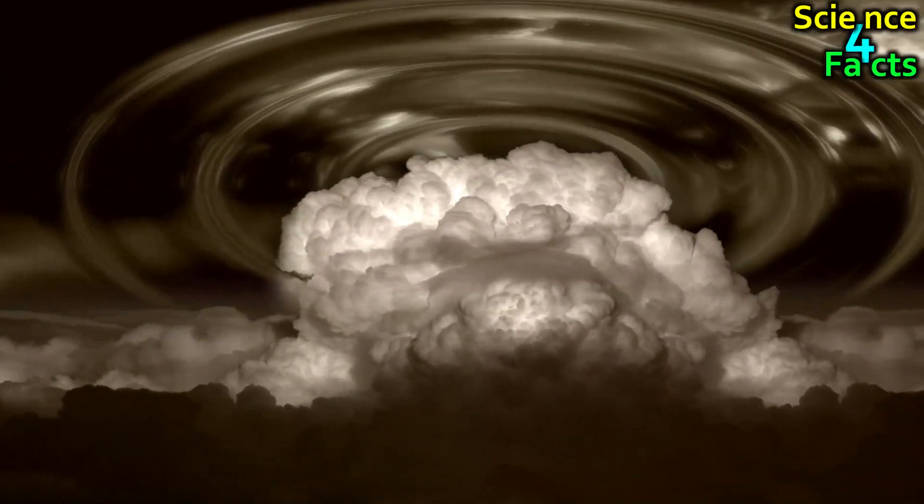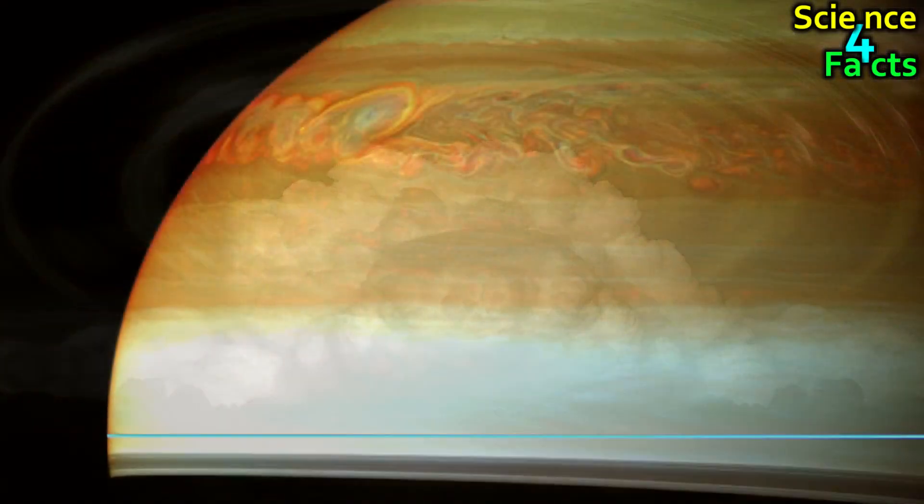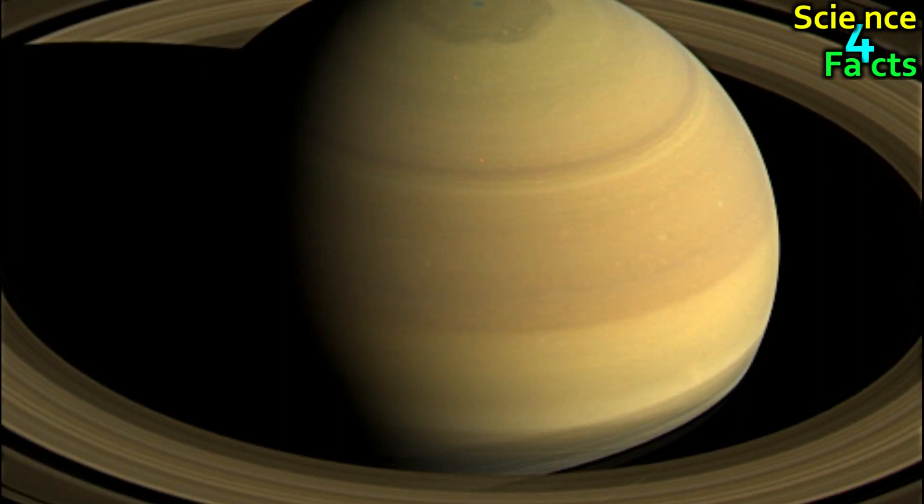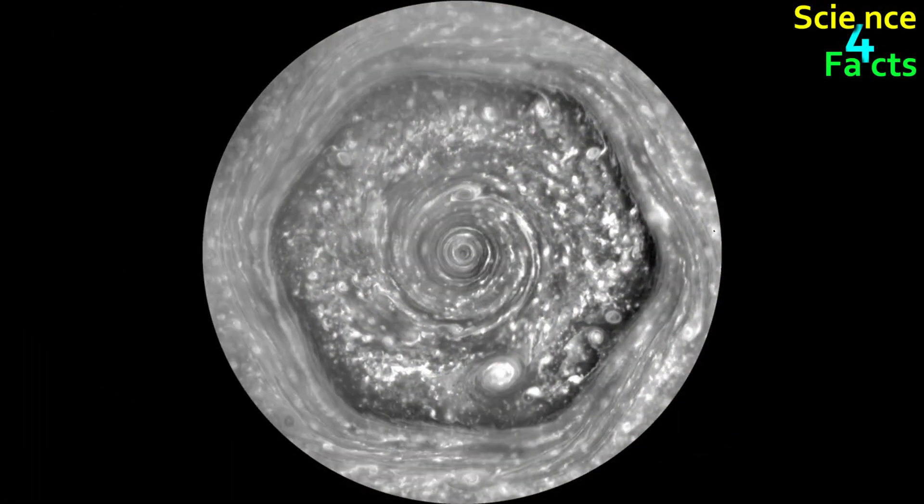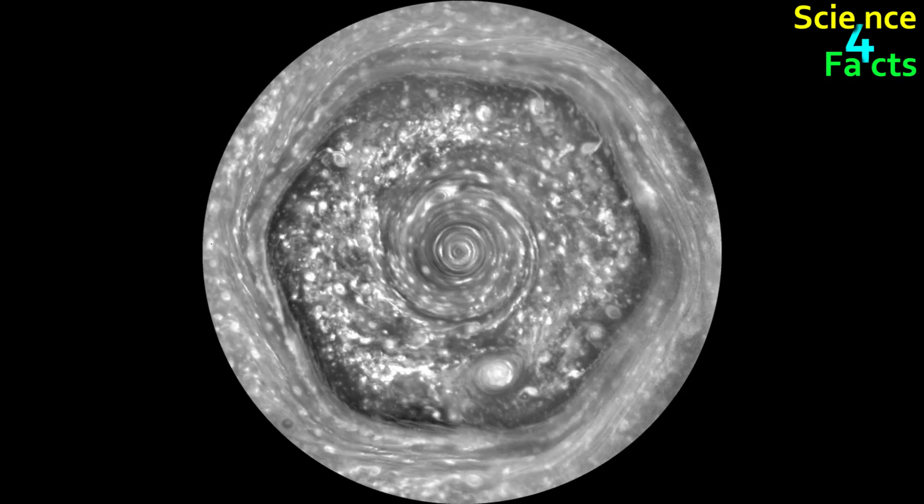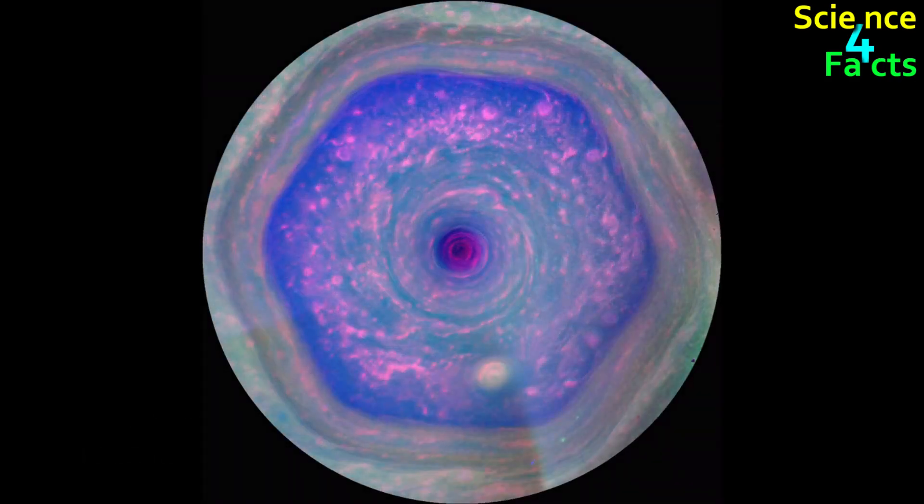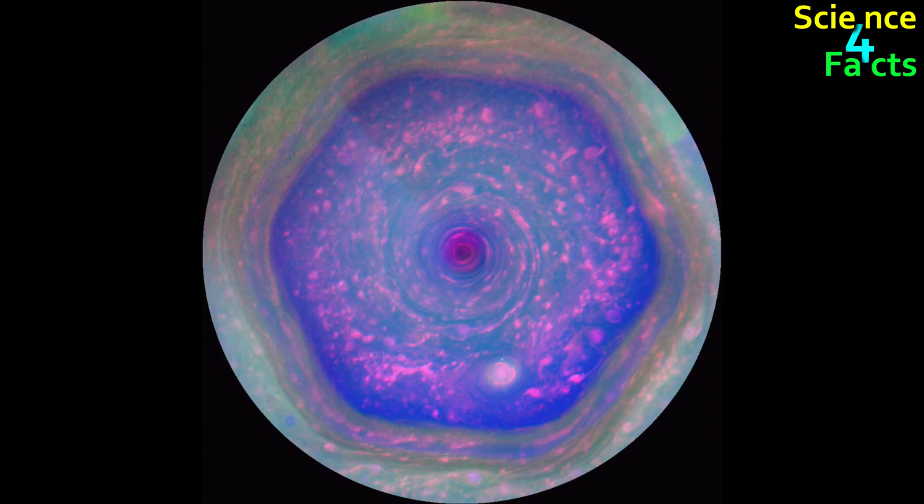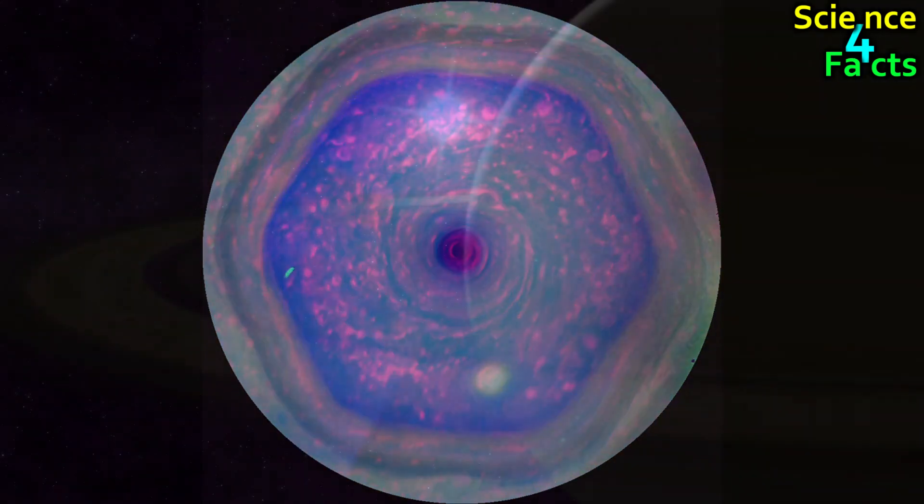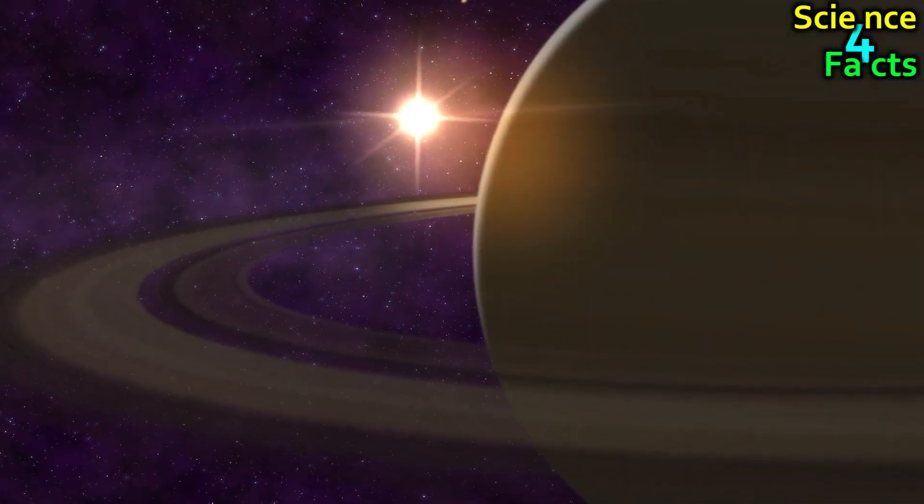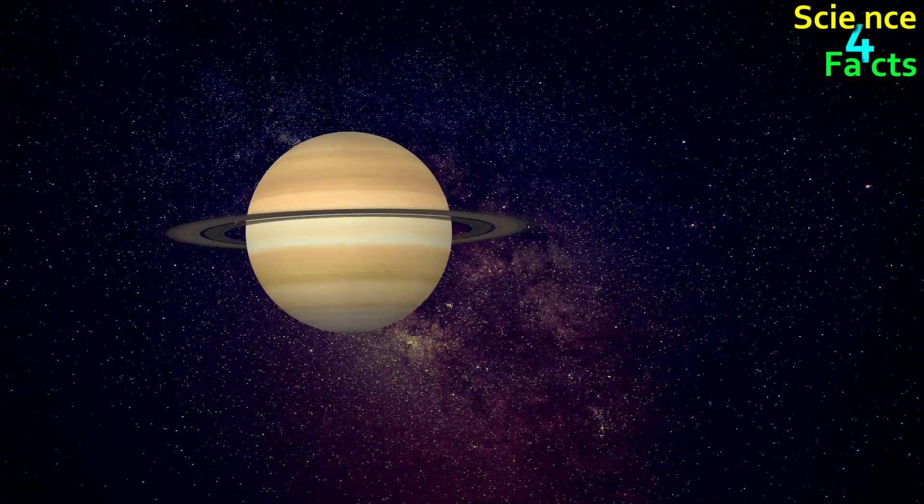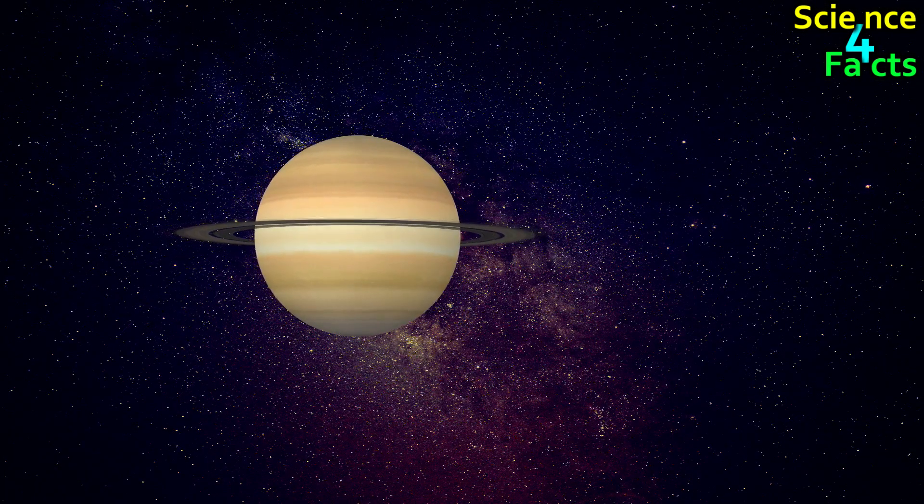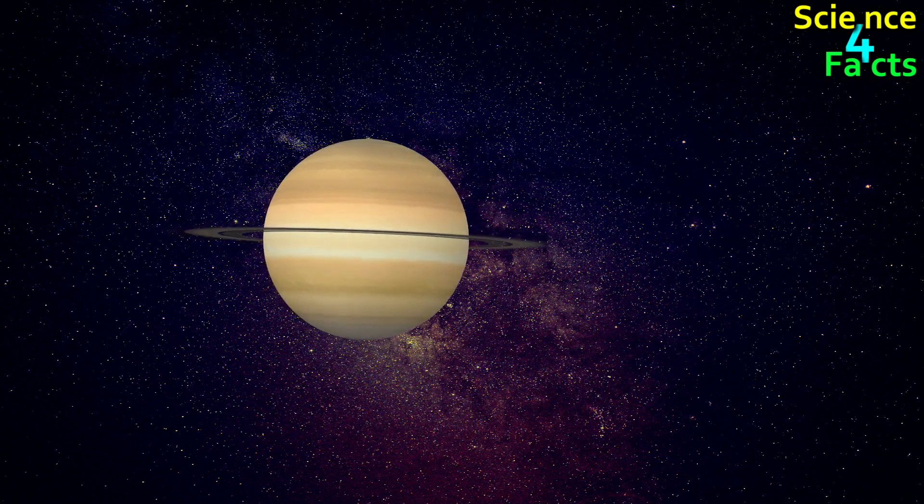Saturn's atmosphere is also very dynamic, with numerous cloud bands and storm systems visible at different latitudes. The planet's most prominent feature is its hexagonal-shaped polar vortex, which is a persistent six-sided atmospheric pattern that sits over the planet's north pole. Overall, while Saturn doesn't have a solid surface to speak of, its rings and atmospheric features make it one of the most visually stunning and interesting planets in our solar system.